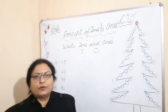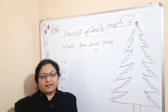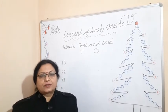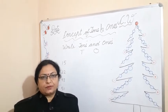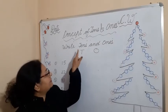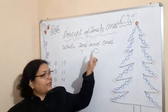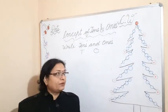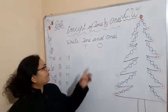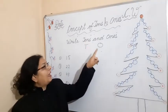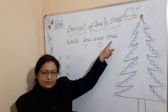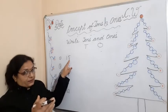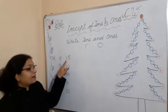Hello students, welcome to my math class again. We will continue the topic of concept of tens and ones. I want to explain two exercises here. T stands for tens and O stands for ones. Ones come on the right side and tens come on the left side.